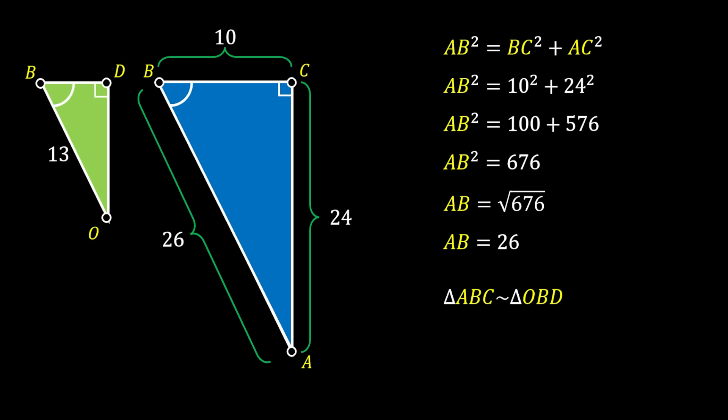We can use this to find the factor of similarity between the two triangles. Since we have the hypotenuse of both triangles, we can divide these values to get that the similarity factor is equal to 2. That means the sides of our smaller green triangle are twice smaller than the sides of the bigger blue right triangle. So the leg BD must be equal to 5 and the leg OD must be equal to 12.